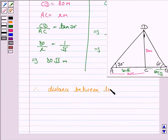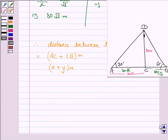We have to find the distance between two men. Therefore, distance between two men is equal to AC plus CB, that is x plus y meter.